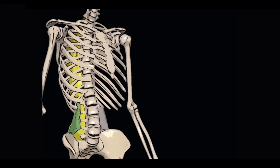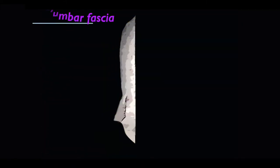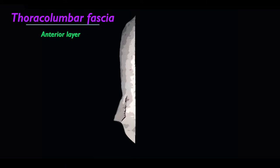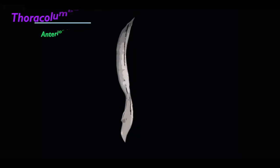The anterior layer covers the anterior surface of the quadratus lumborum muscle. Medially, it is attached to the transverse processes of the lumbar vertebrae, and laterally it is continuous with the aponeurosis of the transversus abdominis muscle and the transversalis fascia. Inferiorly, it is attached to the iliolumbar ligament and the adjoining iliac crest, while superiorly it is continuous with the deep cervical fascia at the back of the neck. It forms the lateral arcuate ligament of the diaphragm and passes anterior to the serratus posterior inferior muscle.